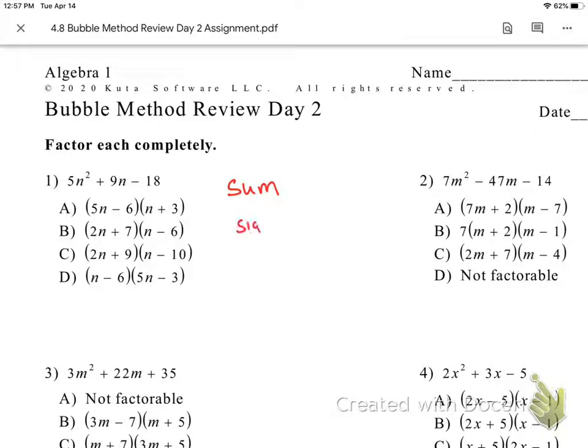So sum, signs. We see our sum has to be this middle term. That's a nine. Our signs, this tells us they're going to be different. This tells me the bigger number is going to be positive.